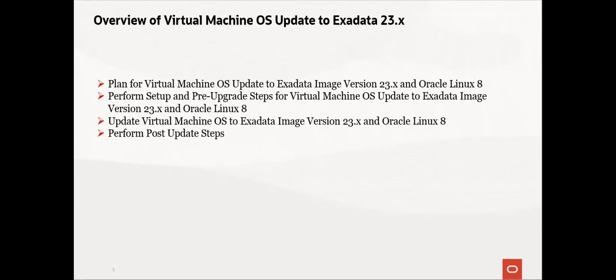Then perform setup and pre-upgrade steps. Run the pre-check from the Oracle Cloud console. This step is important since it will stage software in the VM cluster. Avoid transferring the software manually to the VMs. Configure a driving system where the patch manager will run, and then run pre-checks again with the patch manager utility to verify if the nodes in the VM cluster are prepared for the update. Then update the VM OS to Exadata image version 23.x and Oracle Linux 8 using the patch manager upgrade option. If required, roll back nodes to the prior version.